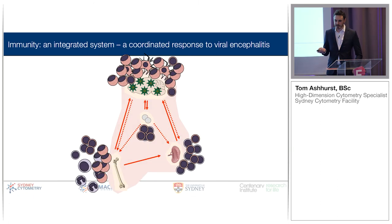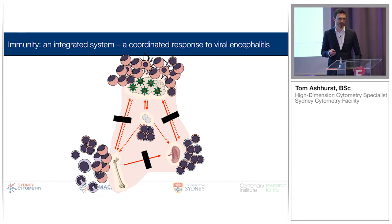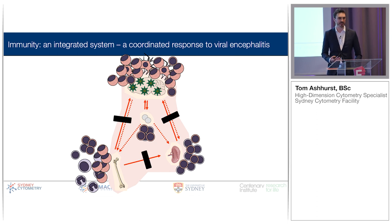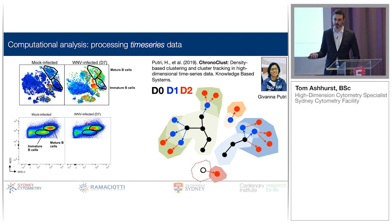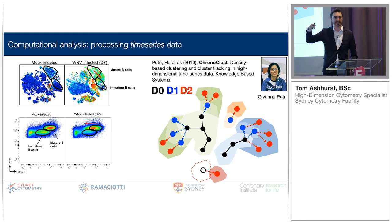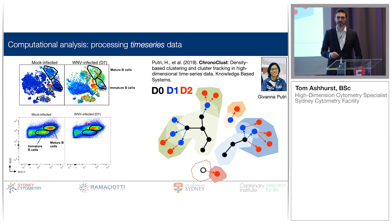In summary, the immune system is complicated. Using high-dimensional tools allows us to make it a little bit less complicated as we try to understand what's going on, and we can then start to try and perturb the way disease occurs, trying to benefit the patient — or mouse in our case. Some of the computational tools are very challenging. Giovanna, a data science graduate student with our group, has developed an algorithm called Chronoclust, which rather than just clustering data and seeing how phenotypes shake out, clusters data on day zero and then integrates new data for each subsequent day of a time course and builds it into an existing framework. It's in early stages of development, but we've published it if anyone's interested.